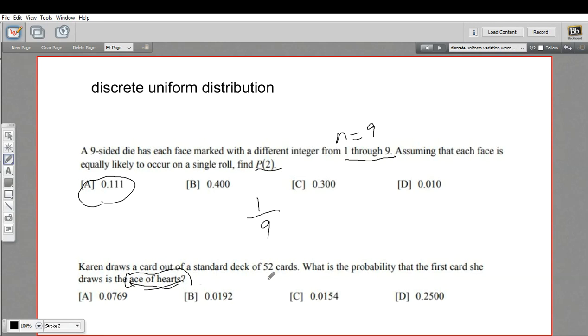And again, this is a discrete, uniform distribution. There are only 52 different things you can pull out, 52 different cards. So our probability of getting any one of them is 1 over 52. And if you plug that into your calculator, 1 divided by 52, you should get 0.0192, and B would be our answer.